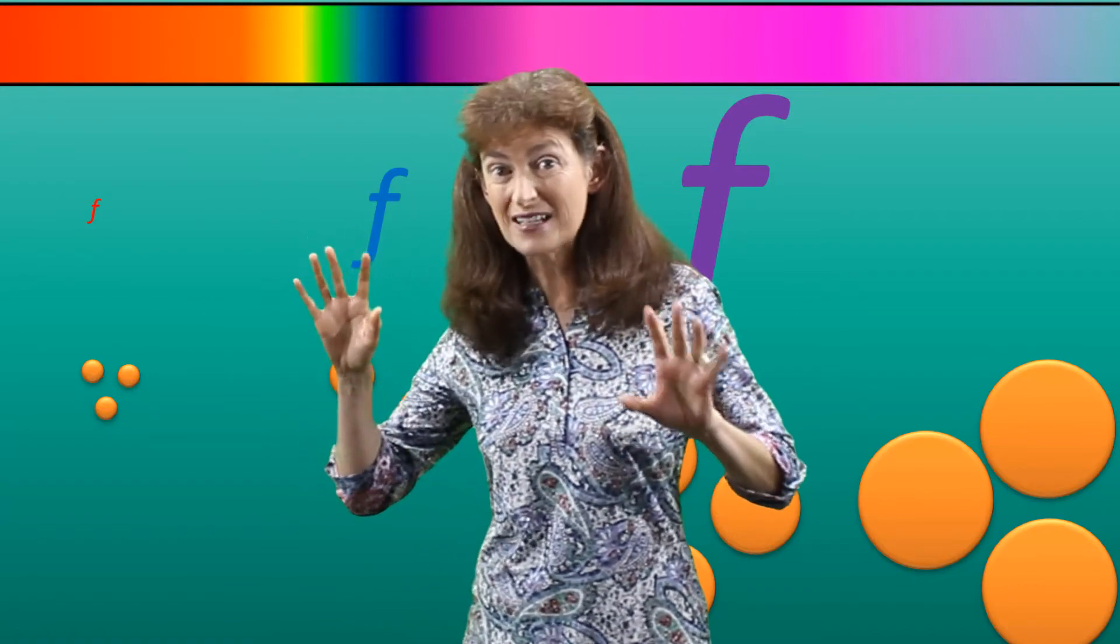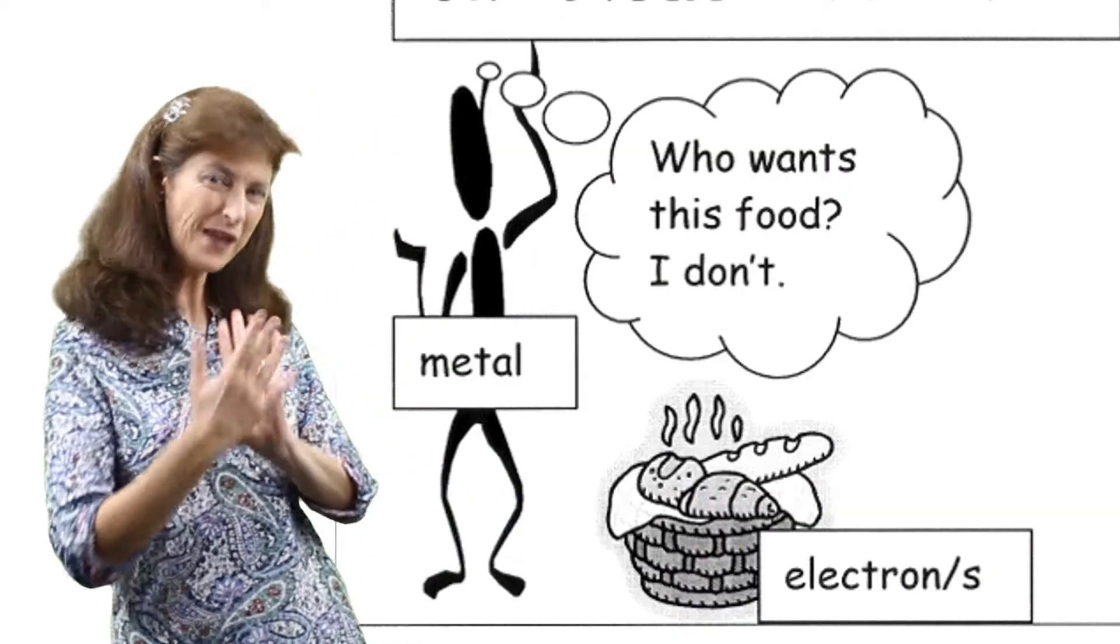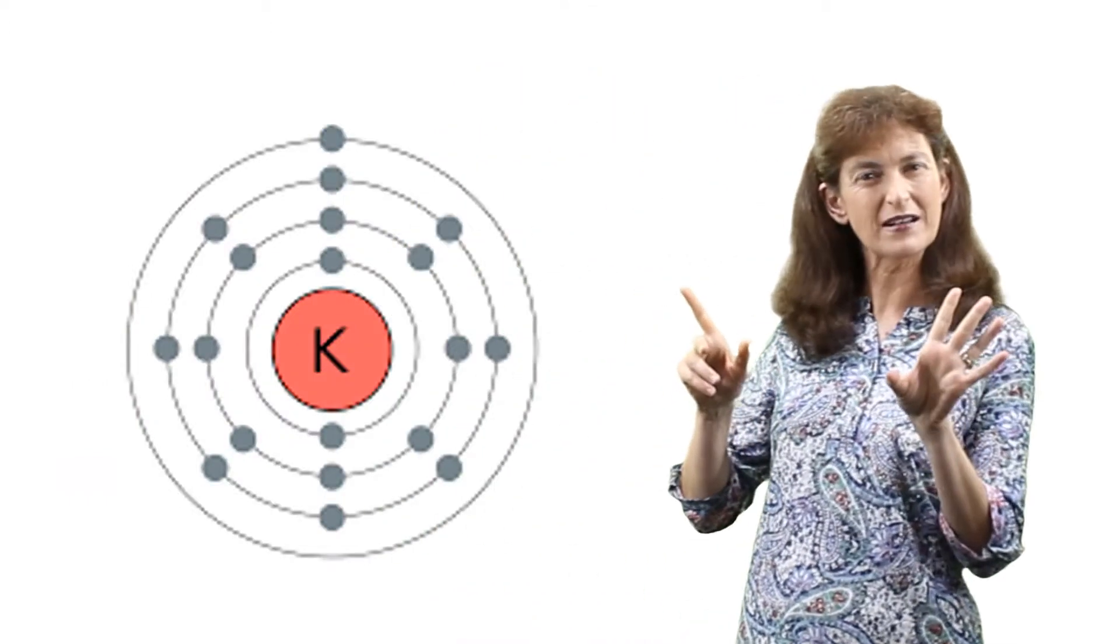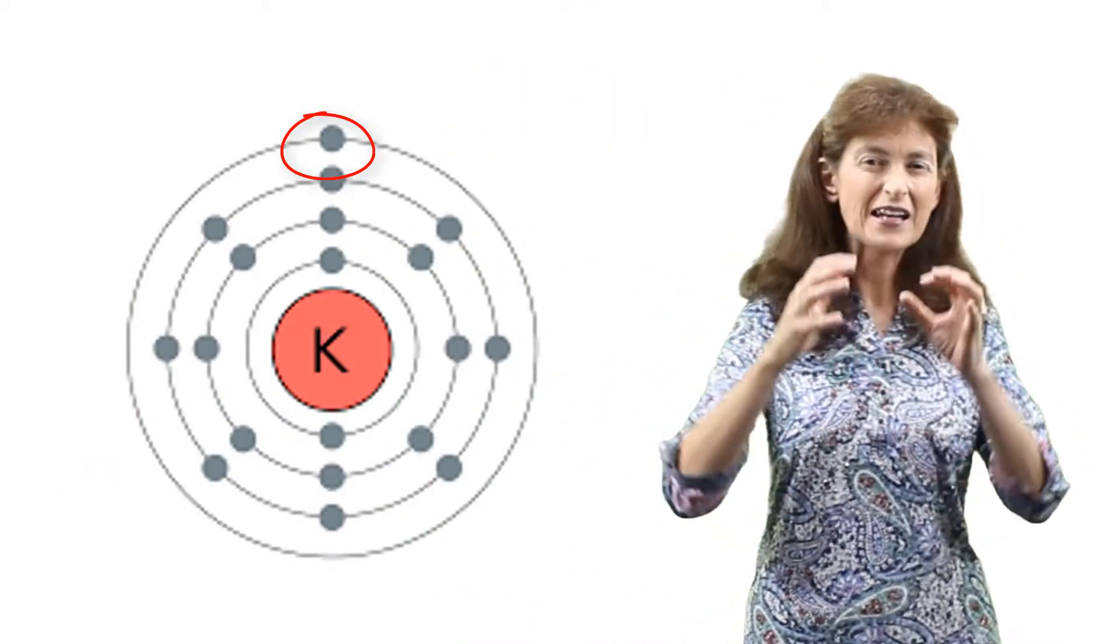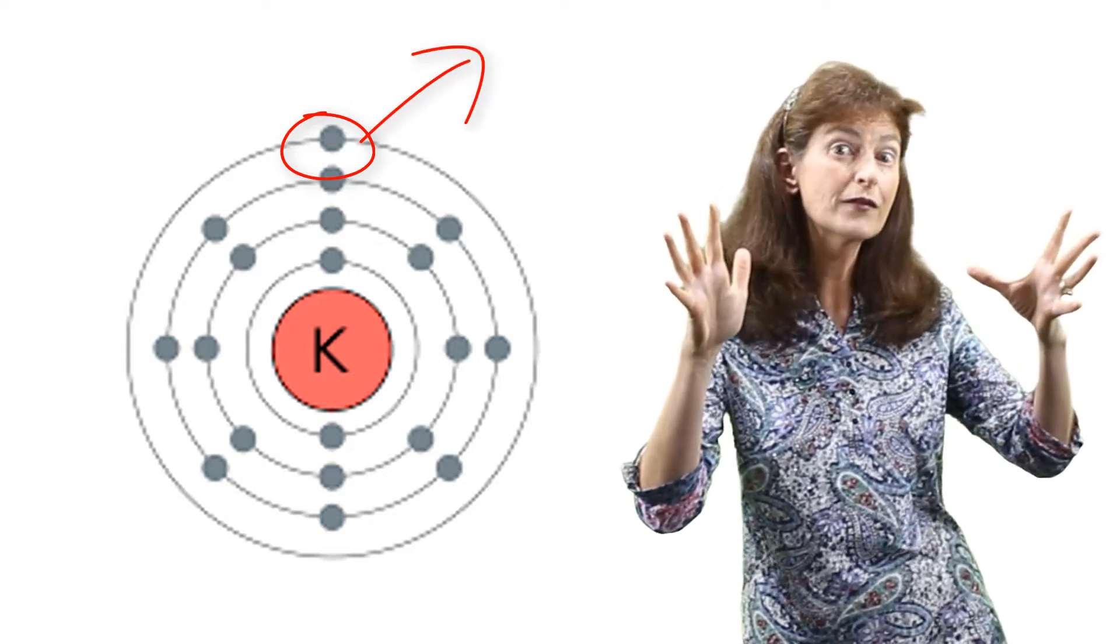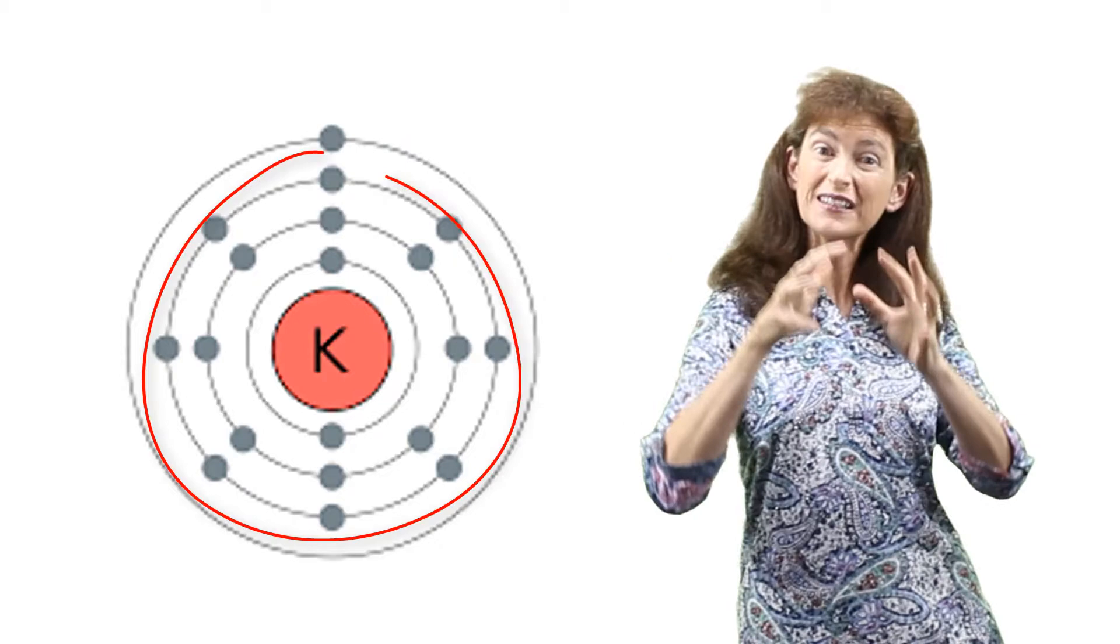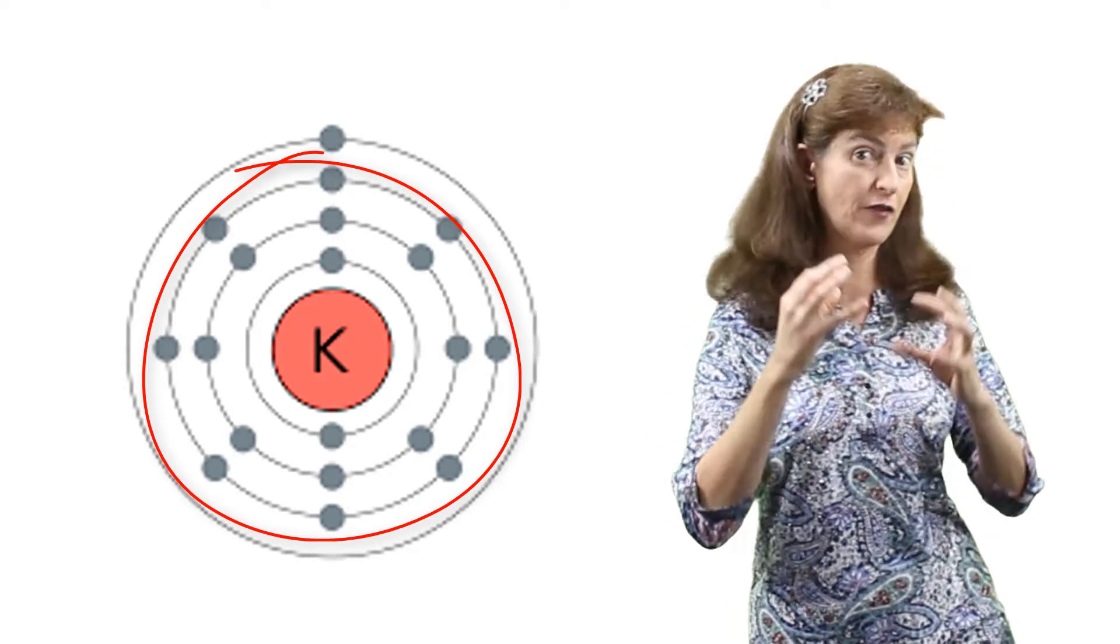Now why is that important? To understand why it's important, we now need to move our story to what's happening in the metal. Now metals are very, very generous. They're so generous because they only have a few valence electrons. And if they could get rid of those valence electrons, that would reveal the noble gas configuration of their core, which is very stable.